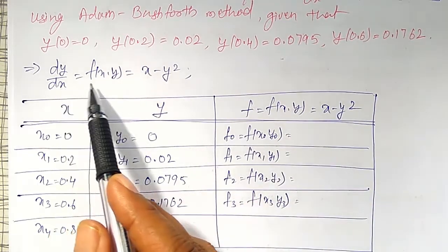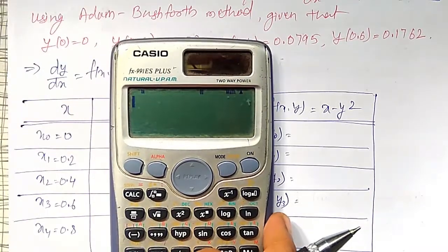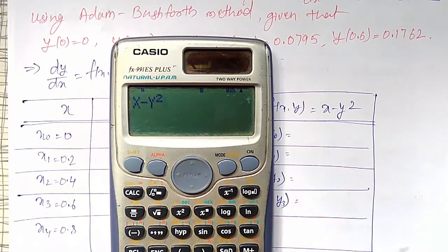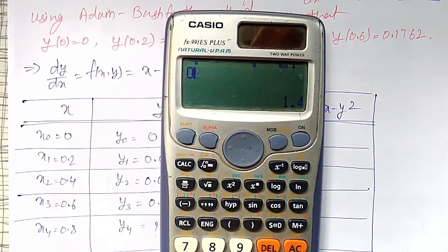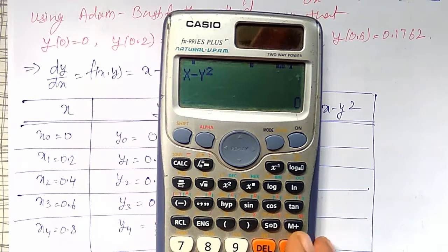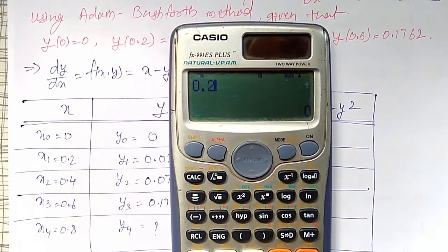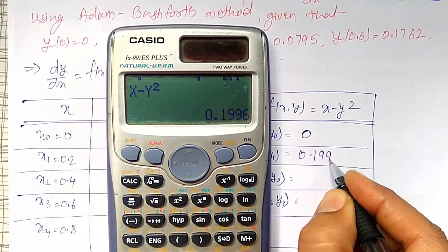My f function is dy/dx = f, that is x minus y². I will use the calculator calc option, where x minus y² is entered. First time using calc option to find f(x0, y0): x0 value is 0, y0 value is also 0. Therefore f0 value is 0. Then pressing equal to, it will ask for x. x value is 0.2, corresponding y value is 0.02, and it comes out to be 0.1996.